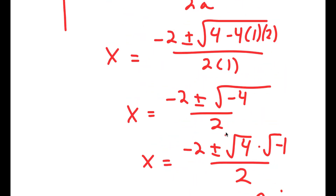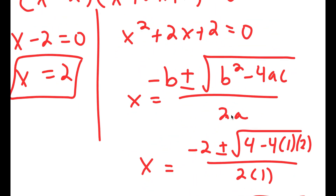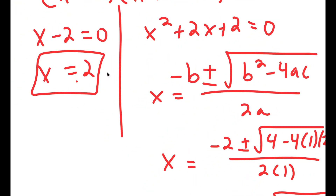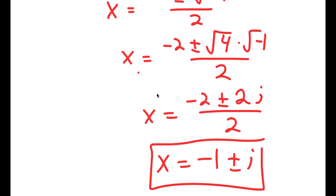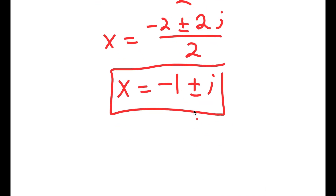So the three solutions to the equation are x equals 2, x equals negative 1 plus i, and x equals negative 1 minus i.